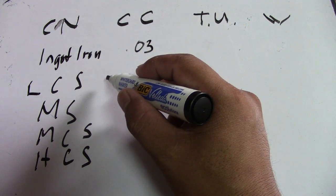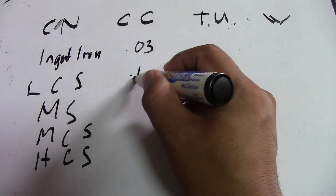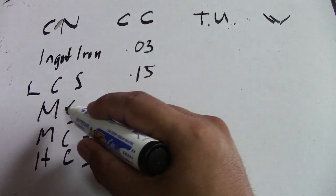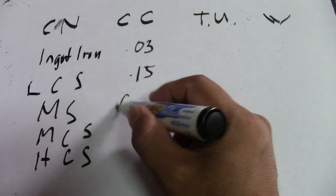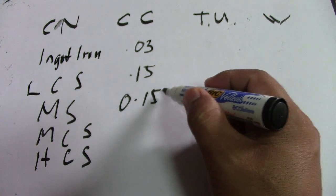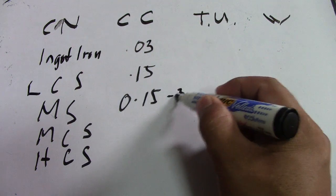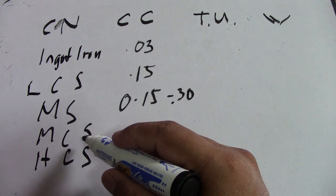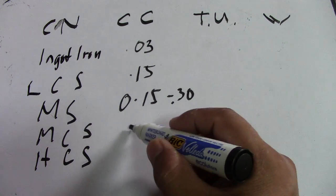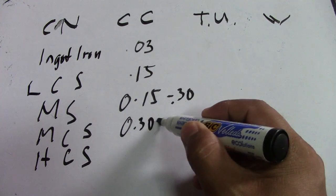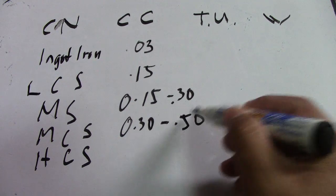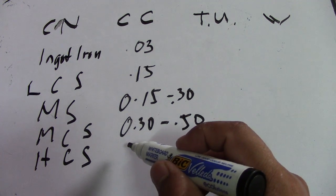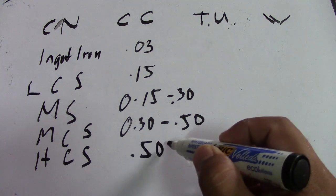For low carbon steel, it is up to 0.15 percent. For mild steel, it is 0.15 to 0.30 percent. For medium carbon steel, it is 0.30 to 0.60 percent. For high carbon steel, it is 0.60 to 1.0 percent.